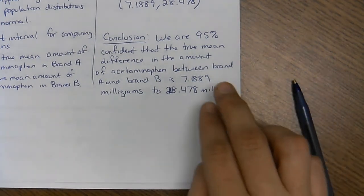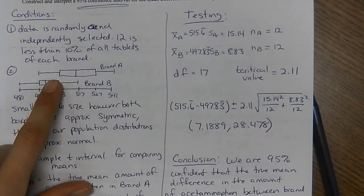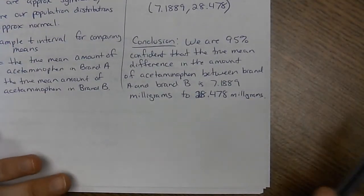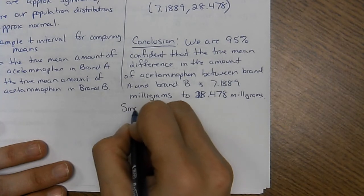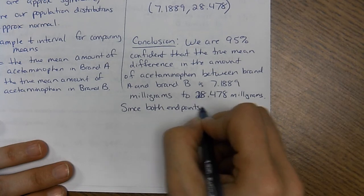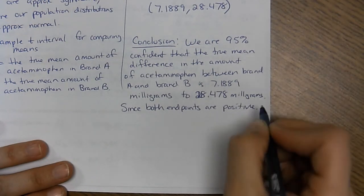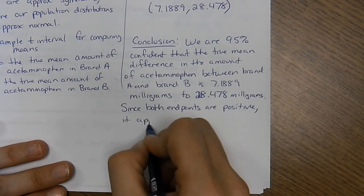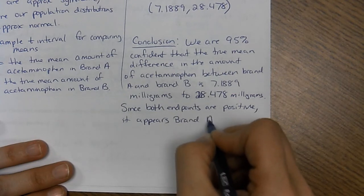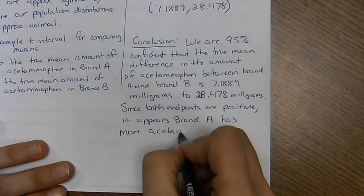Now in this case, both end points are positive, which you can kind of tell from the box plots. It looks like brand A has more. So since both end points are positive, it appears brand A has more acetaminophen.